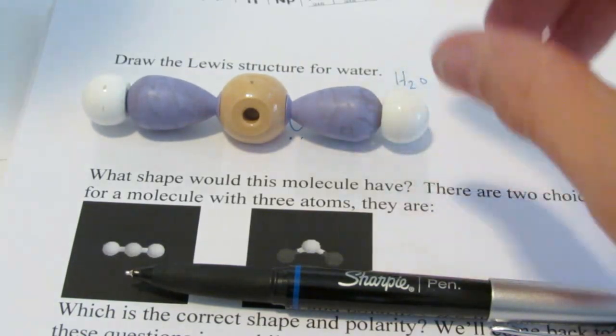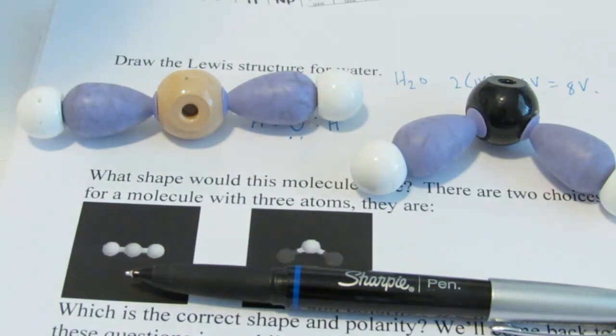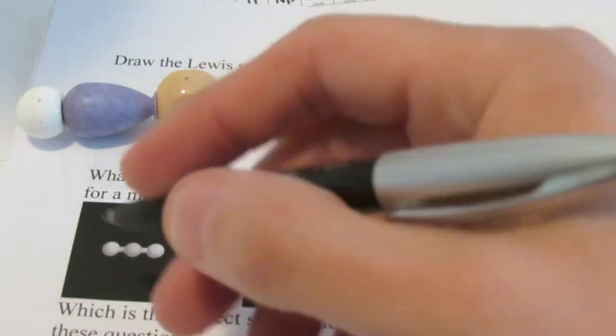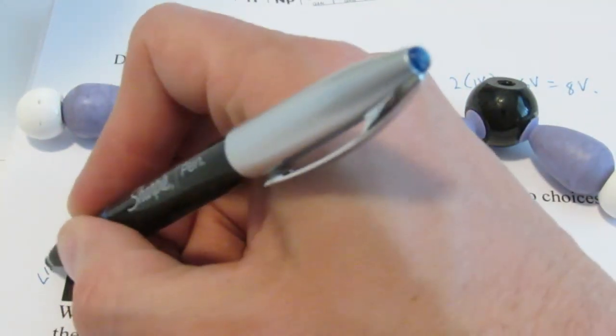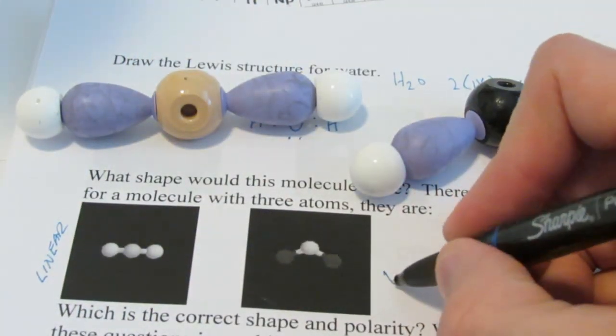Another option could be bent. And bent would have maybe this type of arrangement. So those are our two choices. This first one, the one on the left, is called linear. And the one on the right is called bent.